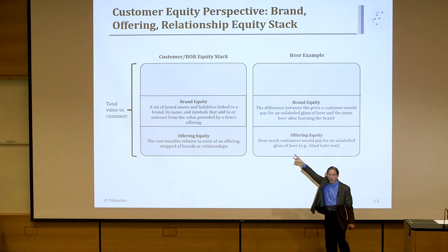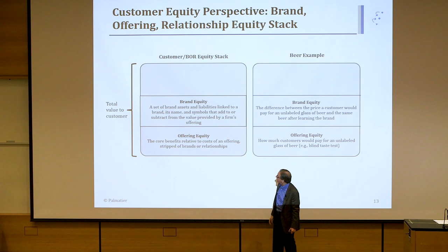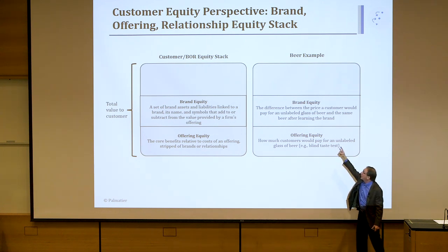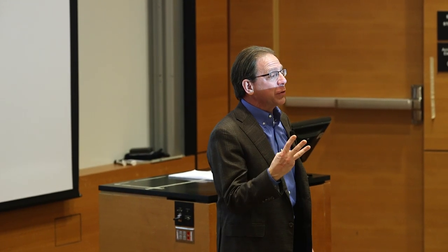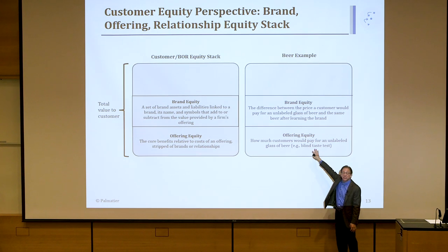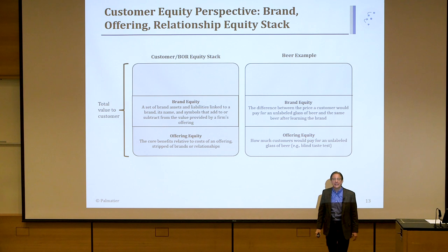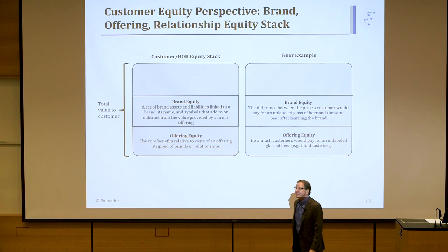Now let's say I add brand equity to that offering equity. Brand equity is the set of brand assets and liabilities linked to the brand name, asset symbols, that add or subtract from the value. In the beer example, brand equity would be if I took the bag off the beer and — oh, that's a Heineken. You say: I really like Heineken. I'd say how much will you pay for it? You'd say: I typically pay $8 for a Heineken. The extra $3 on top of the $5 is the brand equity — that's how much extra you'll pay besides just the product. Do people really pay for that? Yes. Look at Tiffany jewelry. You can buy the same diamond at a store down the street for half the price. That extra price is to get it in the turquoise bag, because brand is worth something.